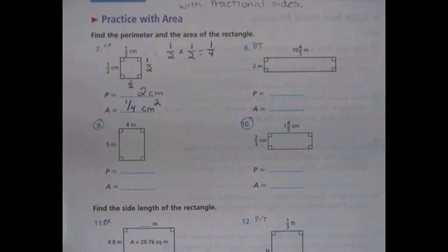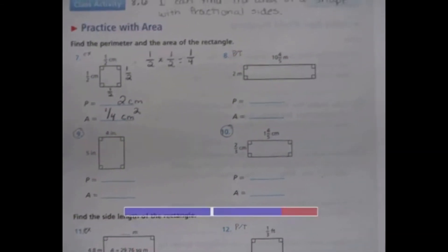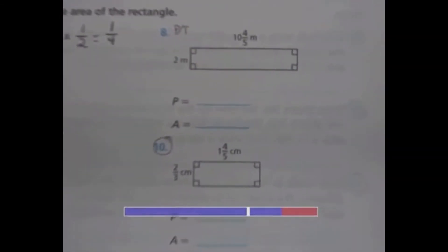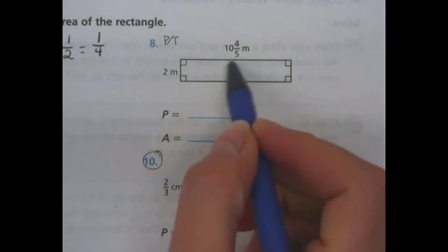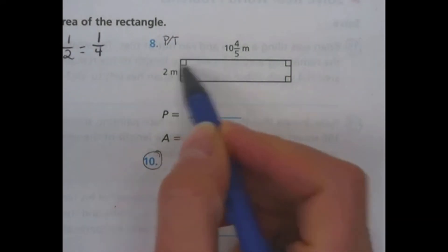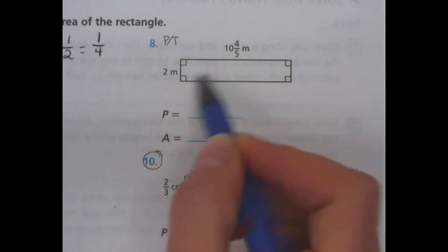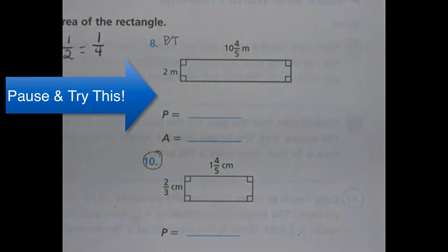For number eight, our pause and try it — you are going to take your fraction here and your other side here: ten and four-fifths meters and two meters. You are going to try and find the perimeter and area. Go ahead and try that first, and we'll be looking for your work, and then I will show you how to do it in just a second.